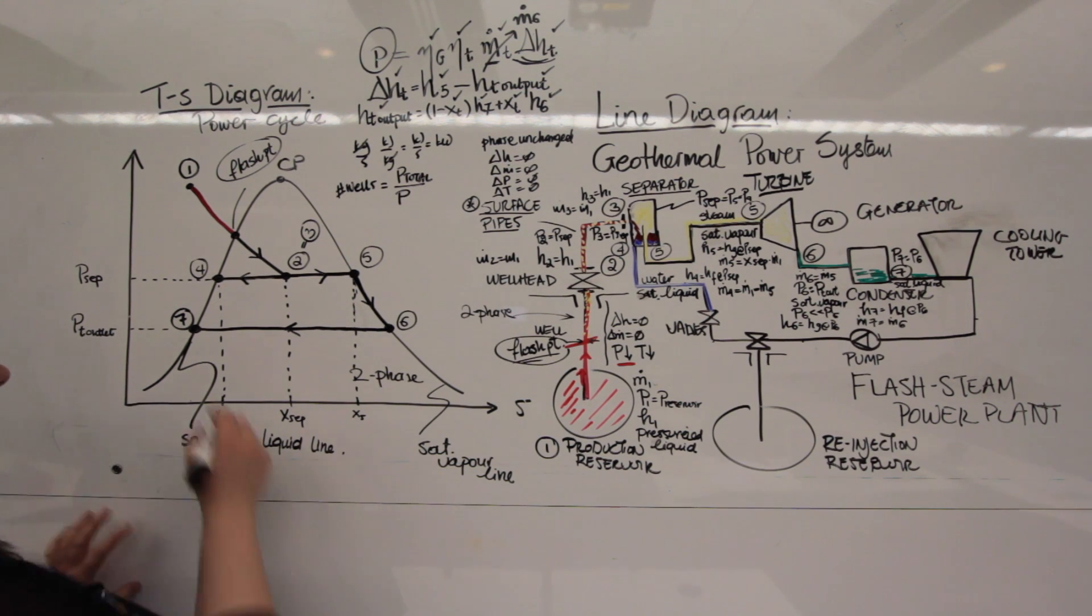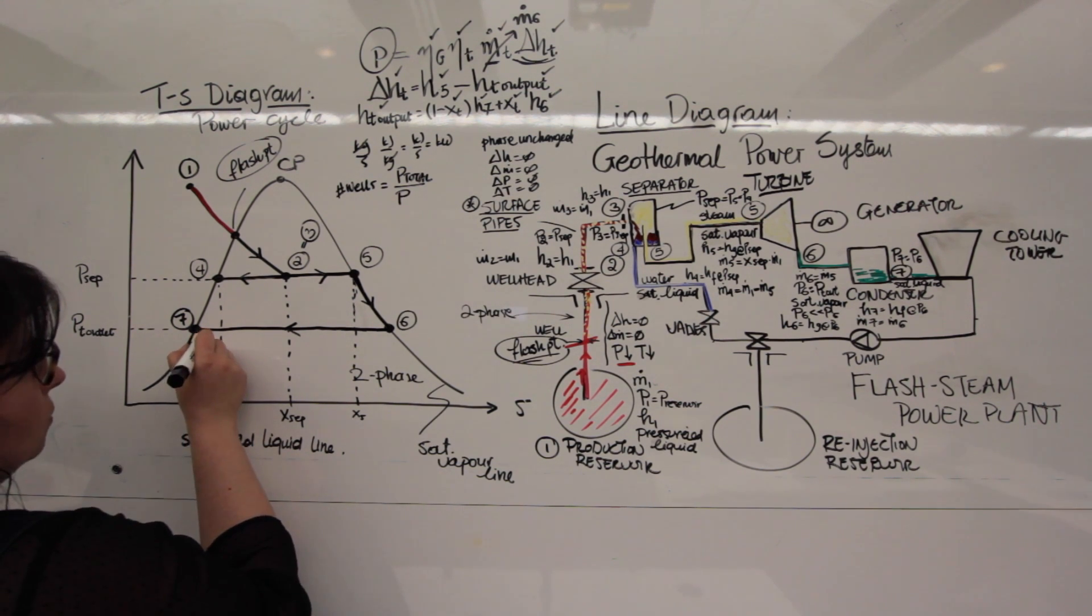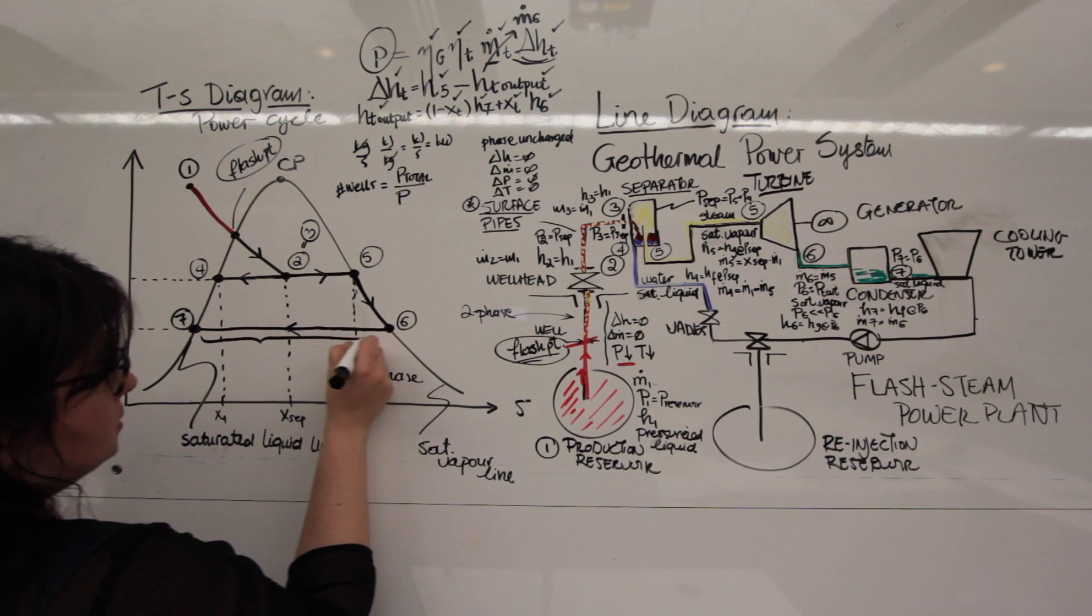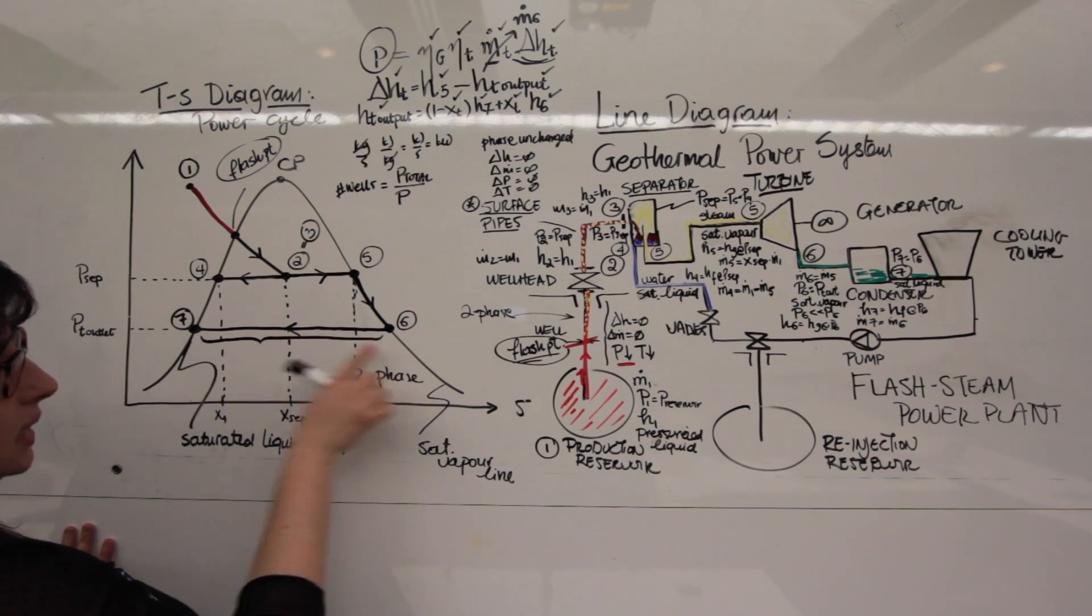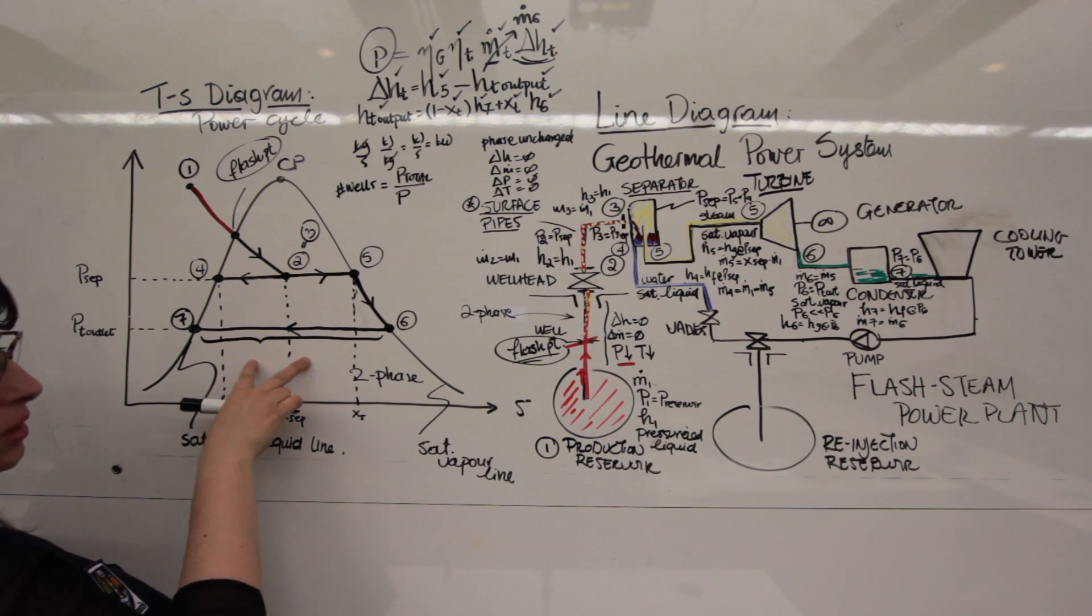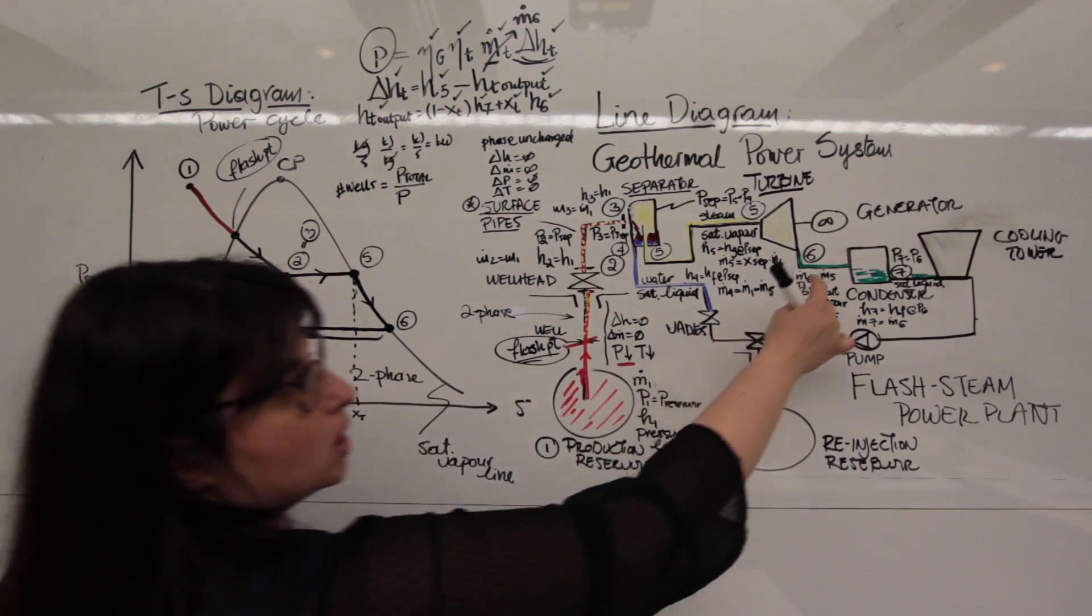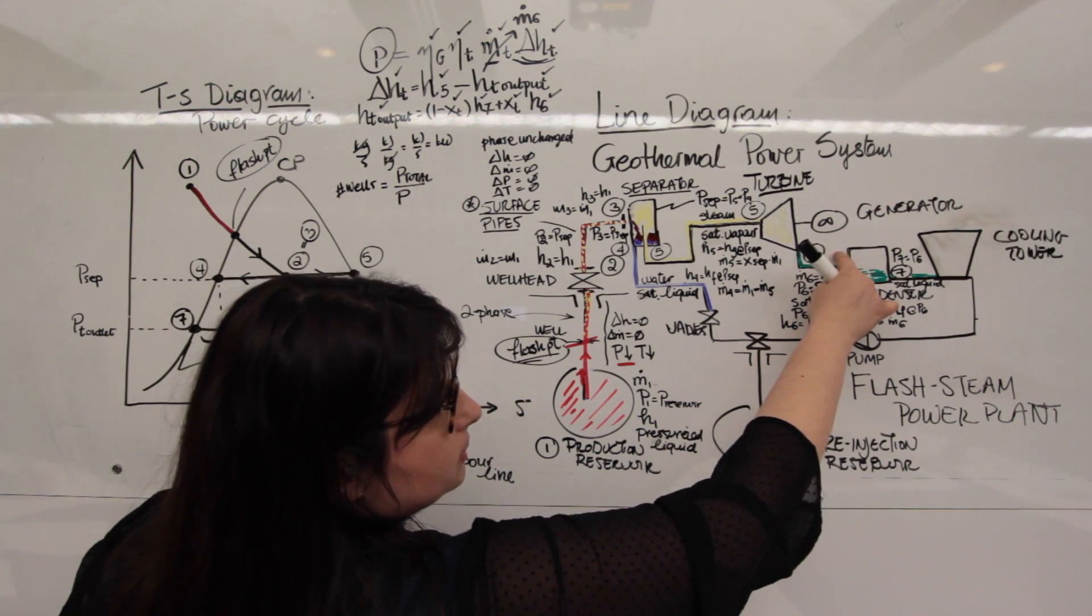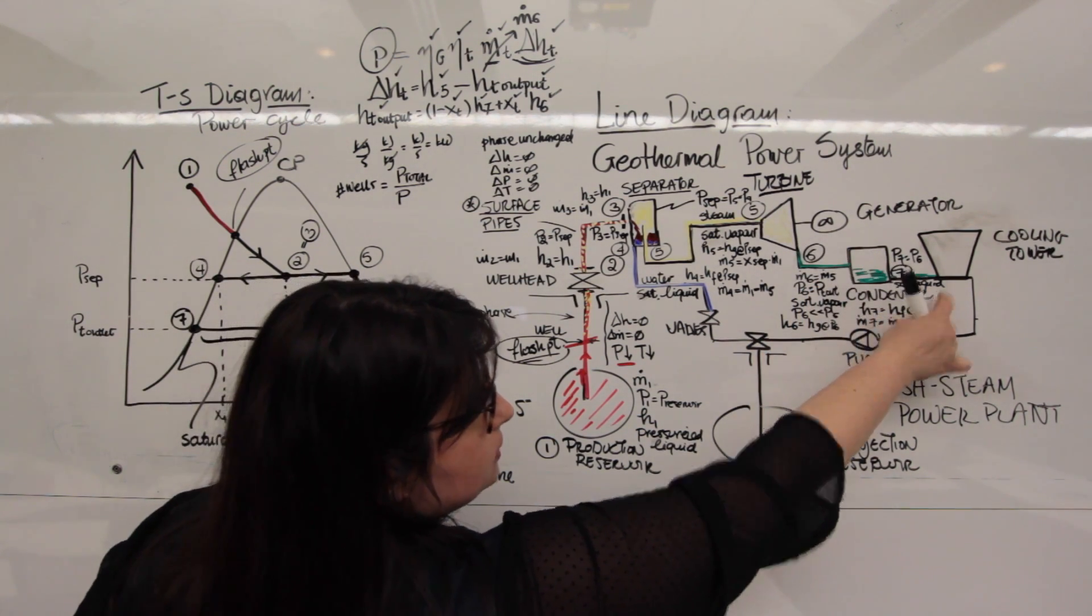One important point here. Remember when we went through the T-S diagram? What did we say is this? This is the amount of heat that the condenser will need to remove from that saturated vapor going into it to turn it into saturated liquid.